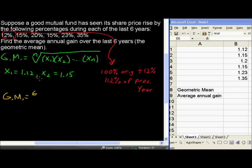It is the sixth root, because we have six numbers here, the sixth root of the product: 1.12 times 1.15 times 1.20 times 1.15 times 1.23 times 1.35.